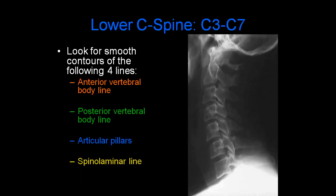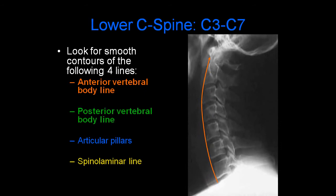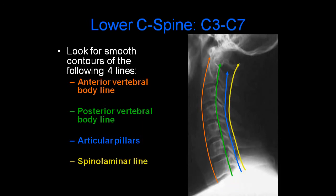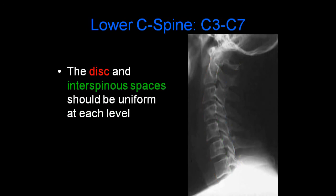When looking at the lower cervical spine, it's important to look for smooth contours of the following four lines: the anterior vertebral body line, the posterior vertebral body line, the articular pillars, and the spinal laminar line. In addition, the disc and interspinous spaces should be uniform at each level.